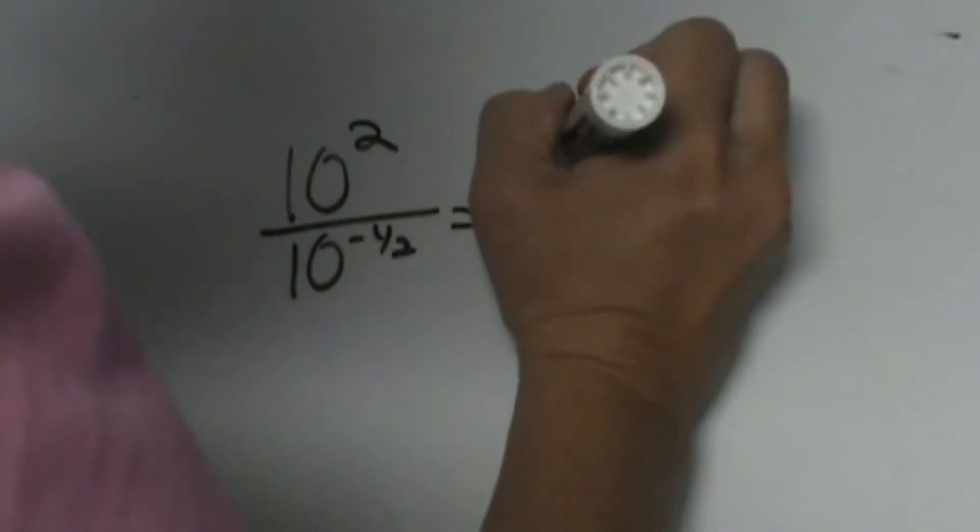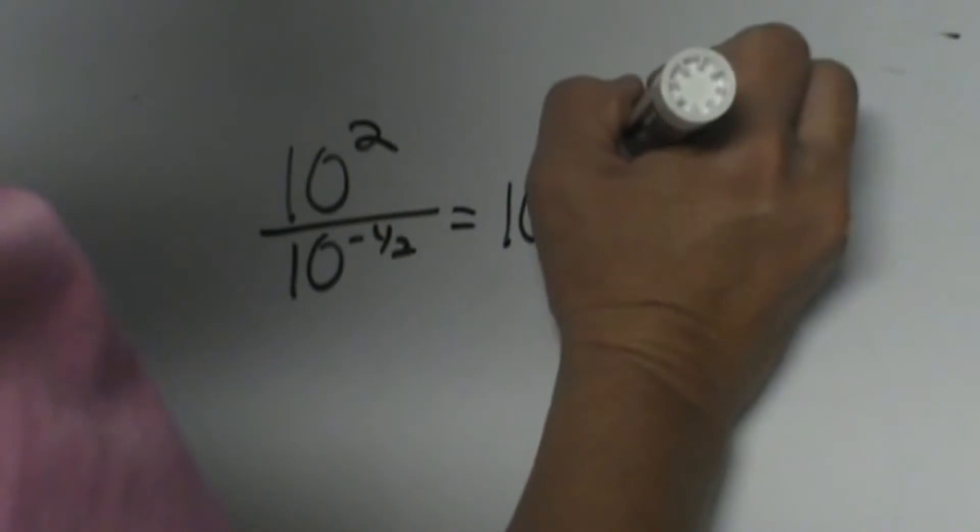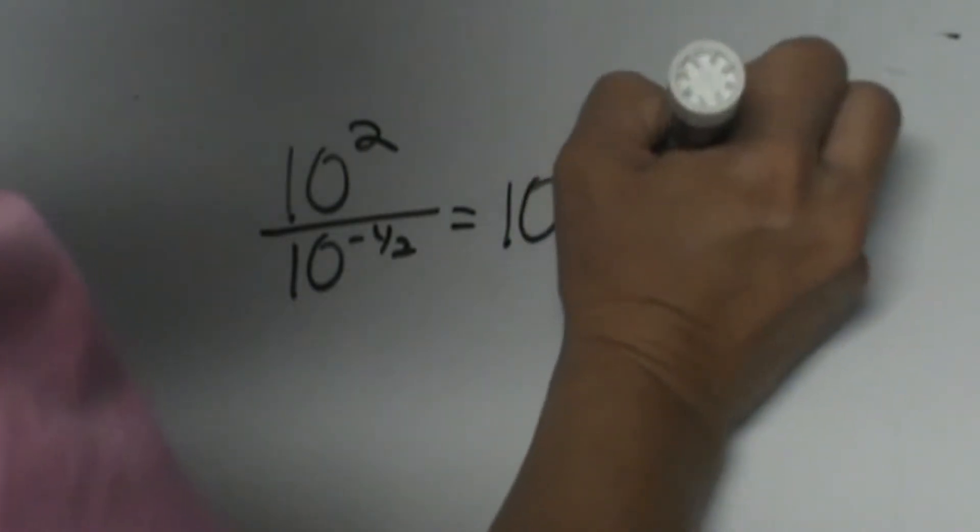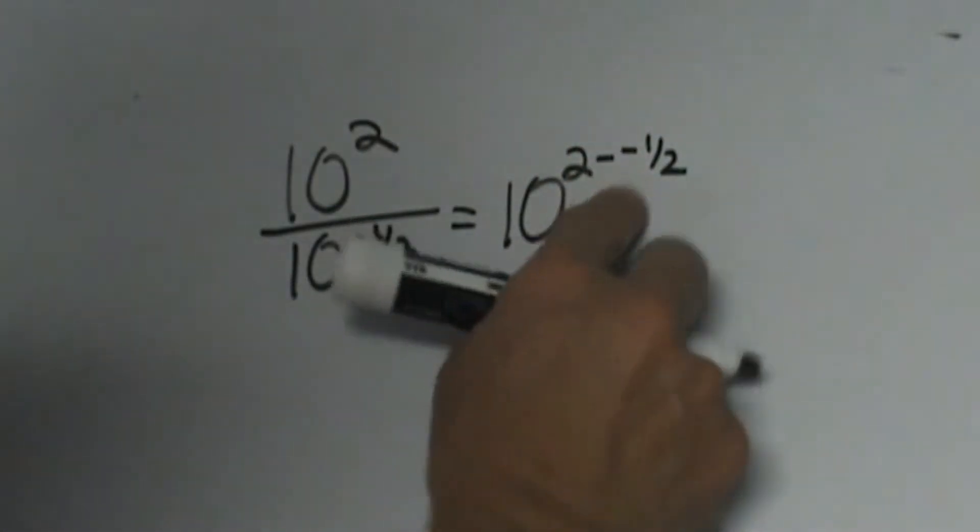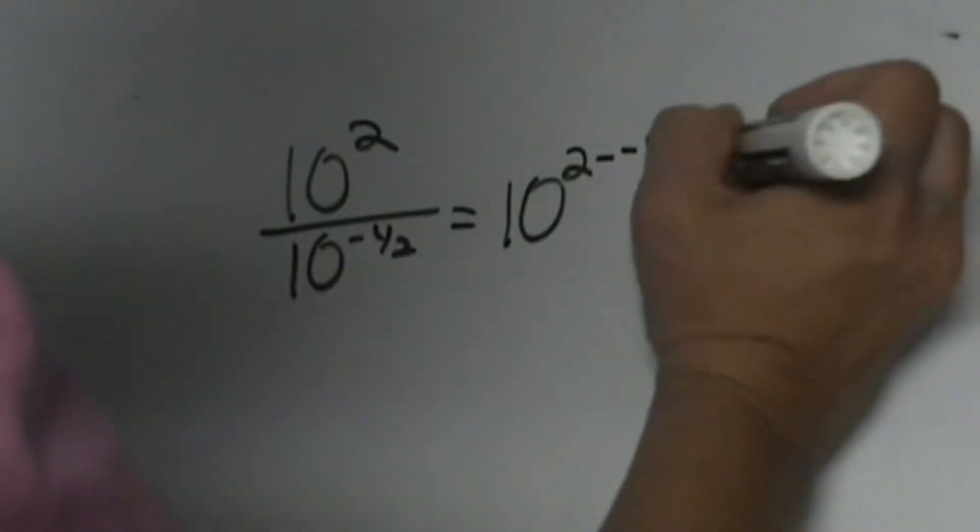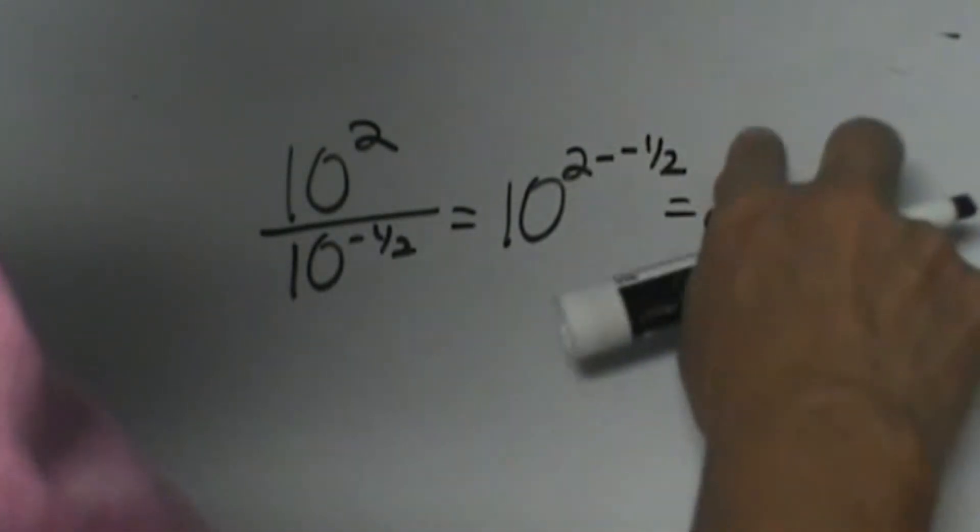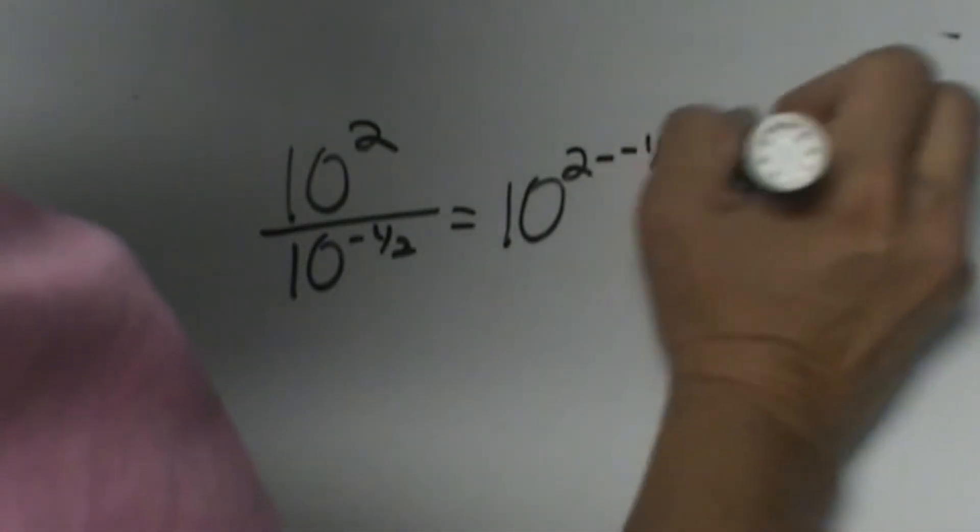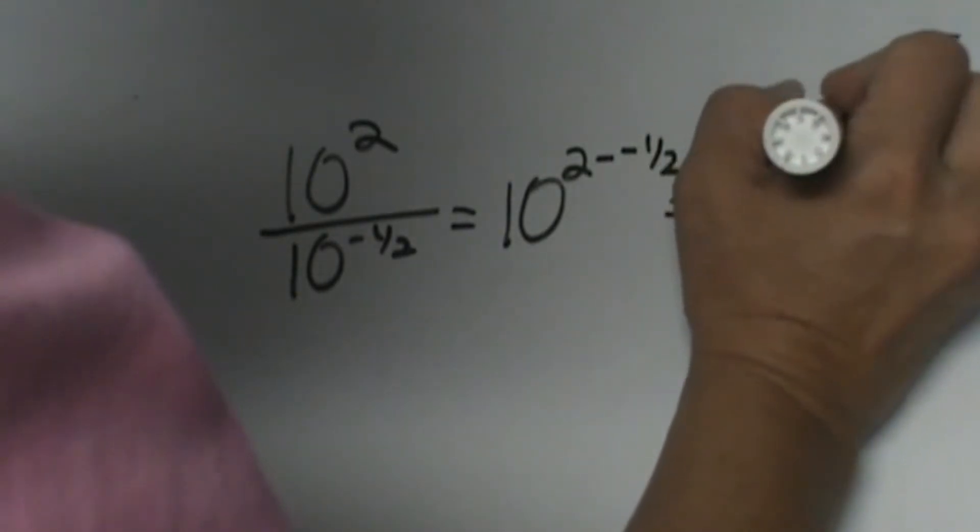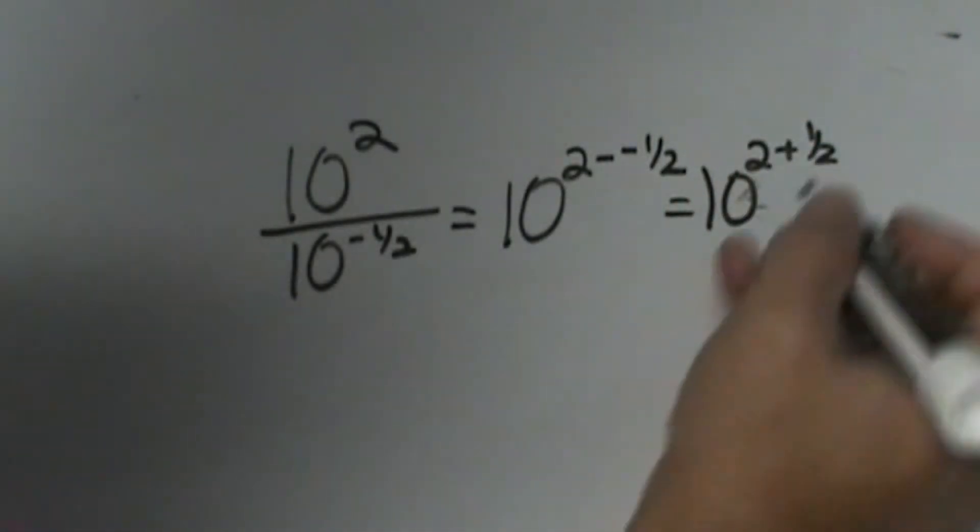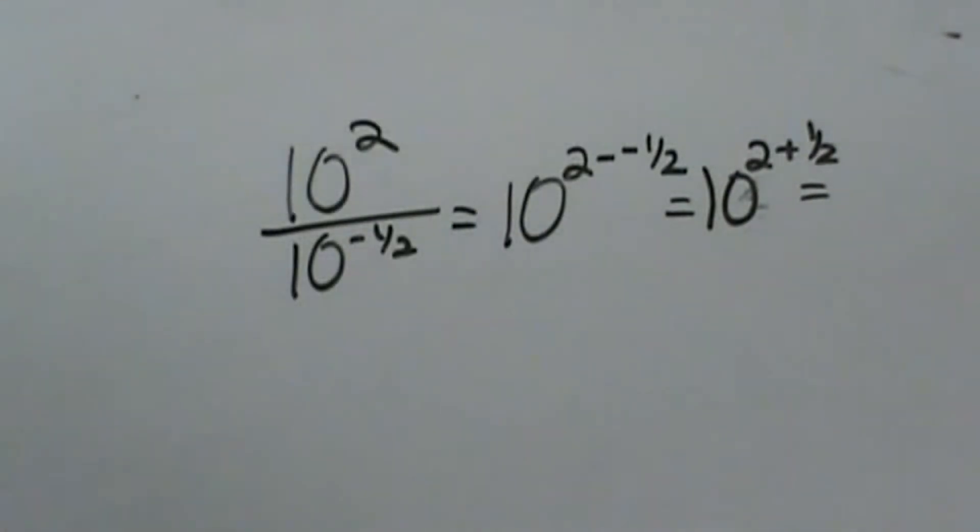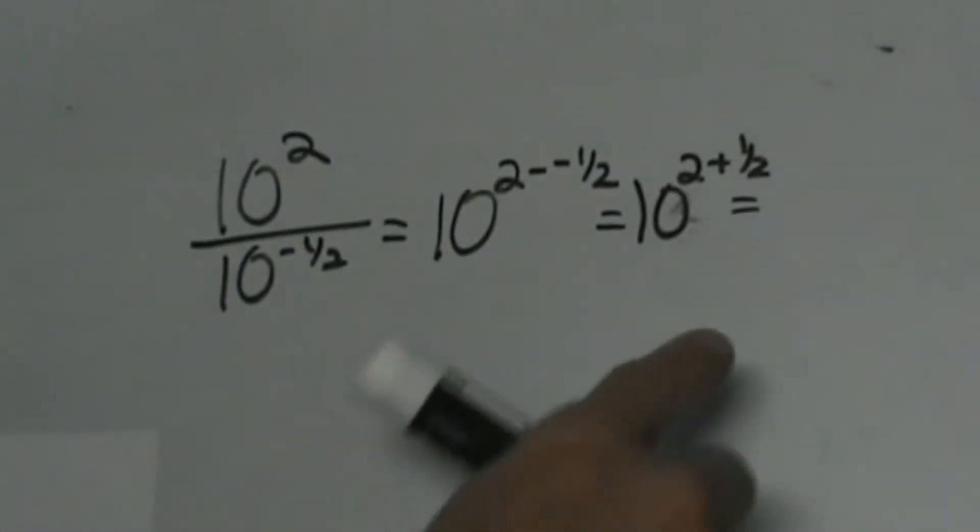So I'm going to get 10 to the 2 minus a negative 1/2. Well, minus a negative 1/2 becomes plus 1/2. So 10 to the 2 plus 1/2 would be 2 and a half, or we usually write our answers as fractions. We're not going to write it as a mixed number.